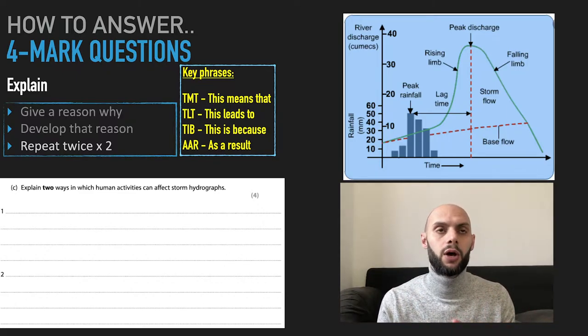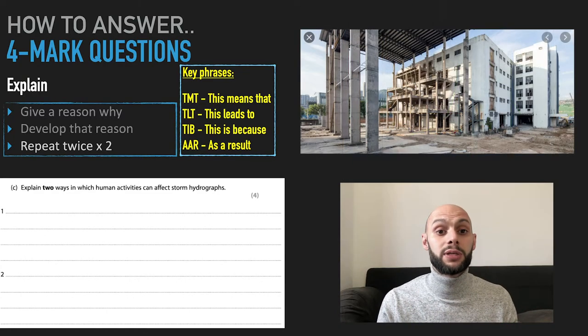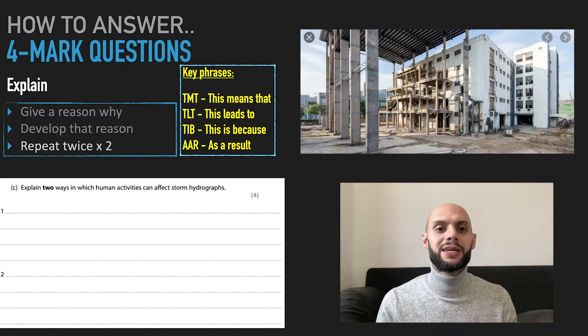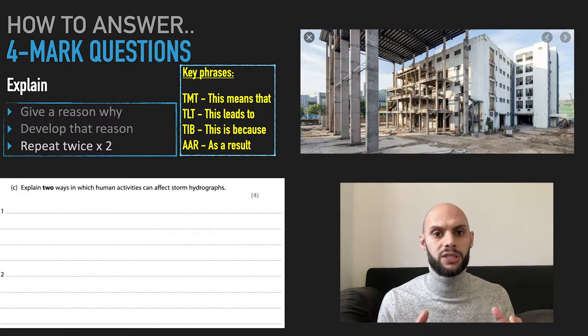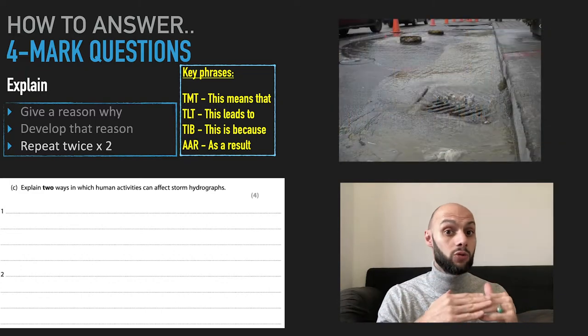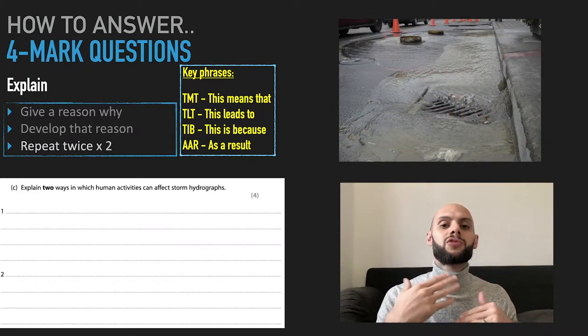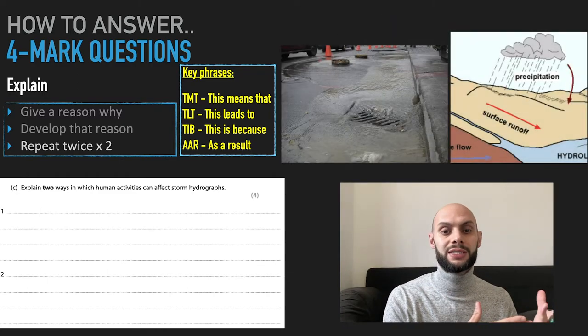So explain two ways in which human activities can affect this lag time, storm hydrographs. Well, if we're talking about urbanization and building with materials such as concrete and tarmac, this is an impermeable material. Water can't go through it, therefore water just runs off. This is called surface runoff. So the surface runoff water increases, which increases the risk of flooding.